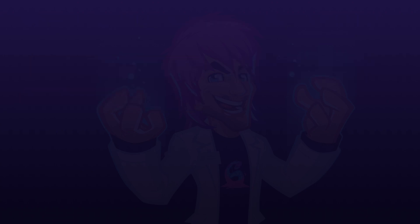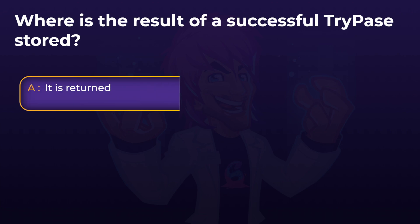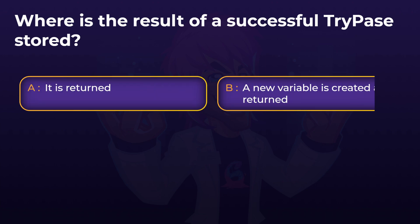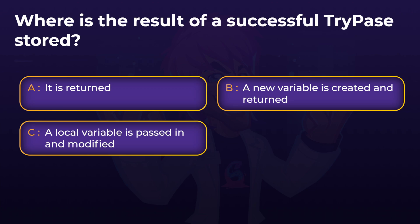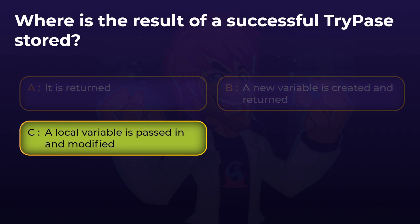Where is the result of a successful try parse stored? Is the value returned from the method? Is a new variable created and returned? Or is a local variable passed into the method and directly modified? The answer is: a local variable that was passed in. We create a local variable and pass it into the method using the special keyword 'out', to allow the method to edit that instance of our variable. The parse method returns the value directly, while try parse returns a boolean indicating success, and the actual value is stored in the variable we passed in.